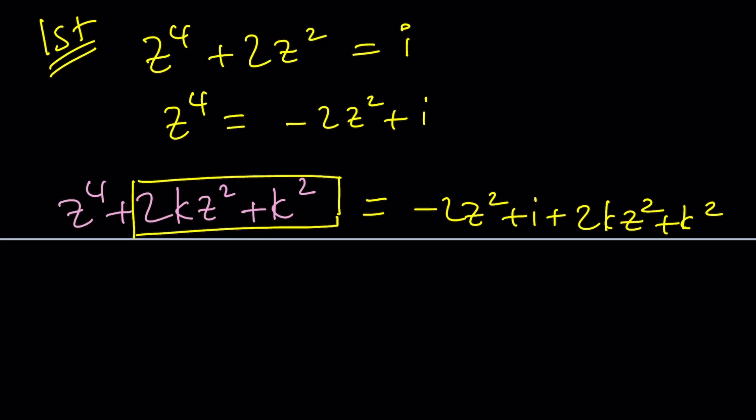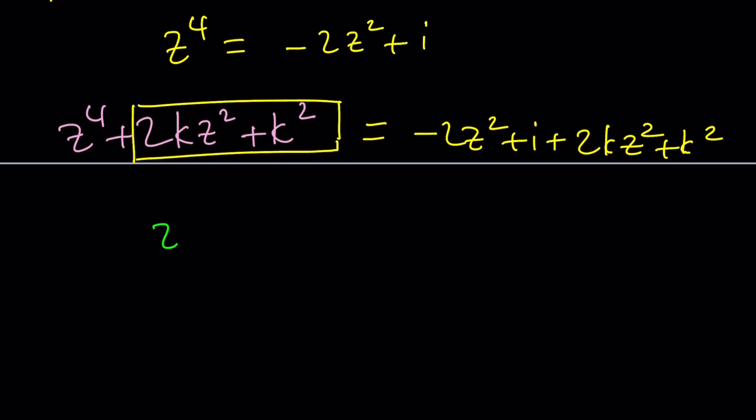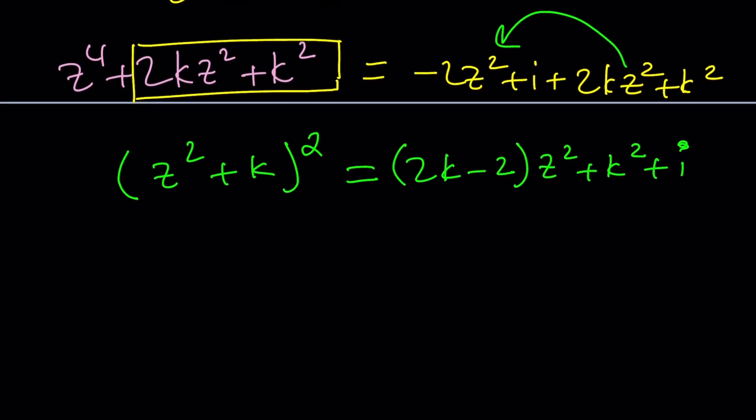So now the right hand side will be added 2Kz squared plus K squared. This will be z squared plus K quantity squared. And now we can arrange this: 2K minus 2 multiplied by z squared plus K squared plus i. So here's the trick. I was hoping to get a z term, but we don't have it. So it's kind of easier. Discriminant will be 0.